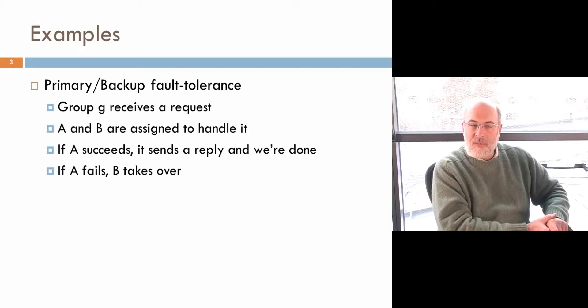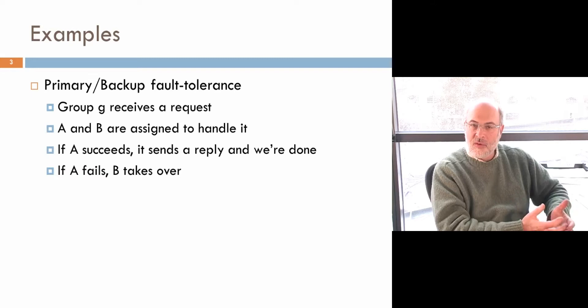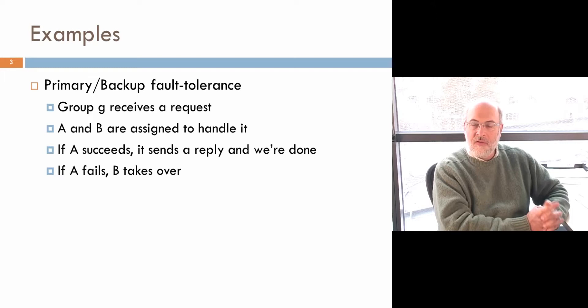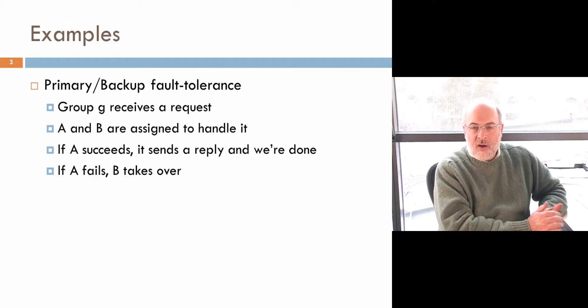Let me give some examples of things you might be trying to accomplish. One famous way of doing fault tolerance is called primary backup fault tolerance. In this approach you've got some kind of a group, maybe that just has two members in it, and the group receives a request, and you decide that A and B are going to handle it. A will do all the work, but if A crashes at some point, B will take over. Very often when you have a primary backup model, you're talking to an external client — if you have a question about the air traffic control system, ask me. And so A might be the contact point, and if A fails, B would take over.